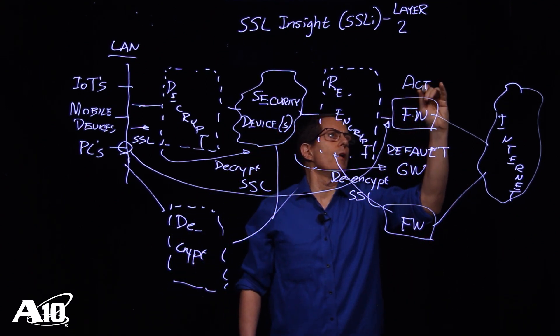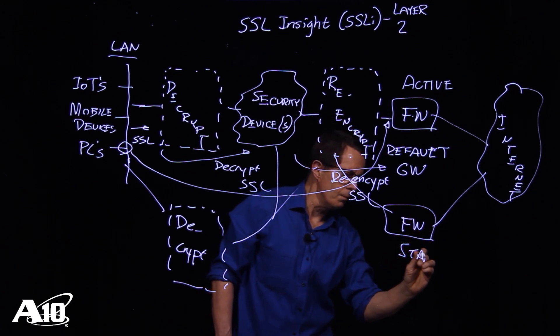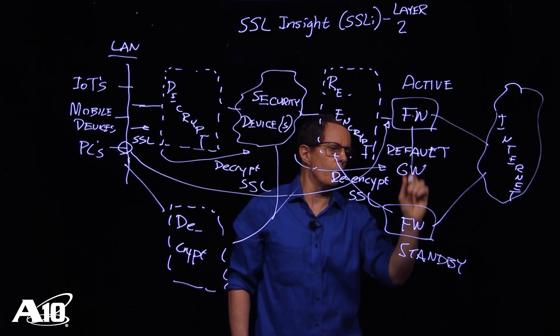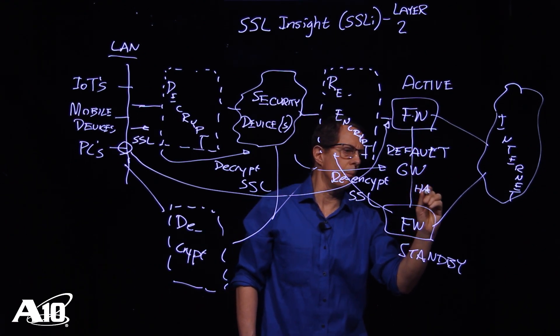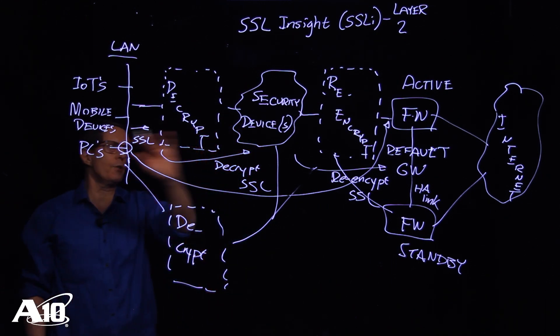That is an active firewall. That becomes a standby firewall. And now it is the firewall failover, that's essentially a high availability link between the two, that dictates the path that the traffic takes.